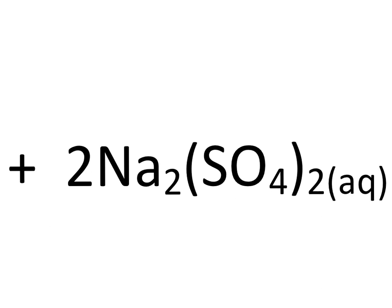Now if we look at the next compound in this equation, it's a little more complicated. We see that we have these parentheses around SO₄. There are three different types of elements in this compound: Na (sodium), S for sulfur, and O for oxygen. Whenever we see parentheses and a subscript outside those parentheses — which is two — we want to distribute that subscript into both elements inside the parentheses.